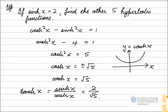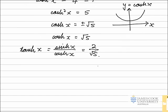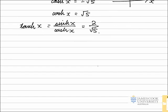That gives us three hyperbolic function evaluations. The other three are the reciprocal functions, which are 1 over each of these. So we'll write out the definitions first. And we remember that sech x is 1 over cosh x. And so in this case, 1 over cosh x is 1 over the square root of 5.